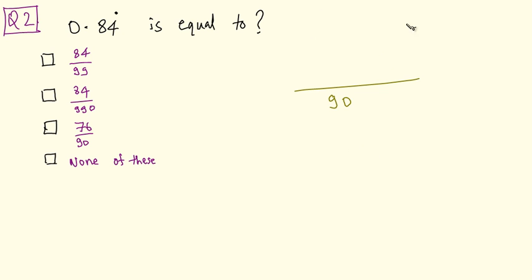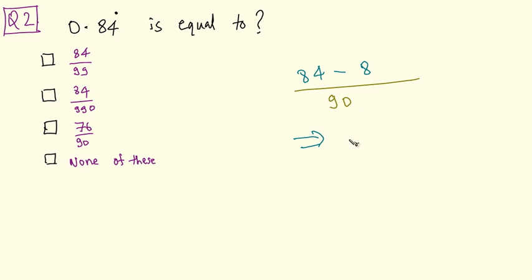In the numerator, we have the number without the decimal point. The complete number is 84 minus the non-recurring digit. The non-recurring digit is 8, so minus 8. That comes out to be 76 upon 90. So our answer is option C.